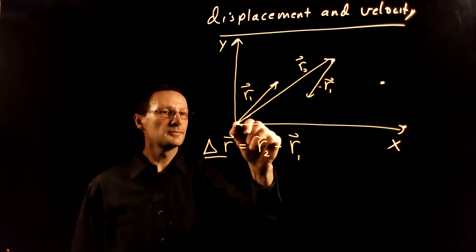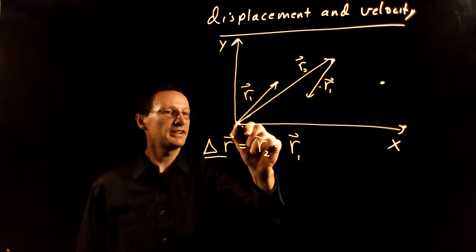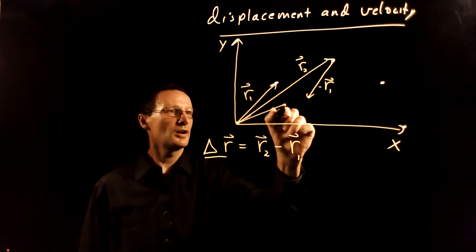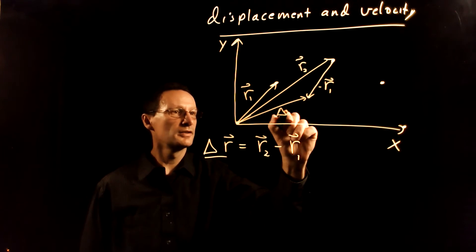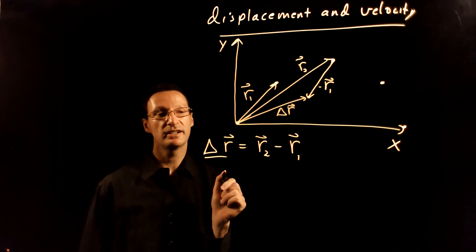We start where we start and finish where we finish. So we started here at this point and then we finish here. And so our delta R, the displacement vector, points from the origin to this point here.